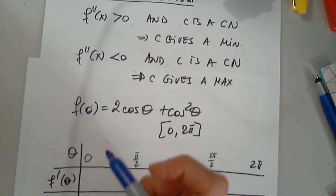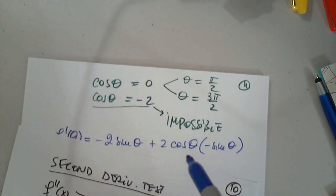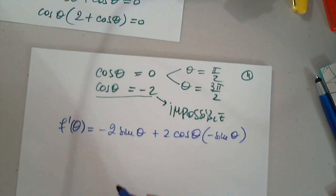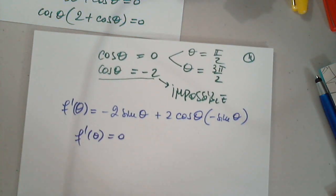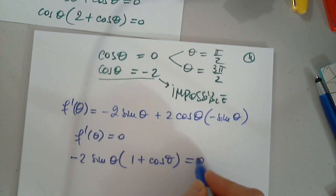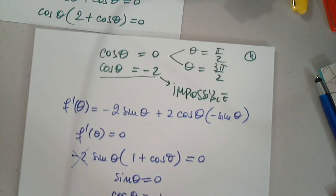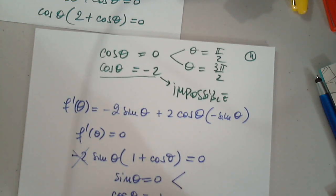So one more time: two cosine prime is negative two sine. Cosine squared — bring two in front, subtract one from the power, differentiate the inner function. So when we set this equal to zero, I will factor out negative two sine theta, and I have one plus cosine theta equals zero. Then we have sine theta equals zero or cosine theta equals negative one. Where is sine theta zero? Theta equals zero and pi.